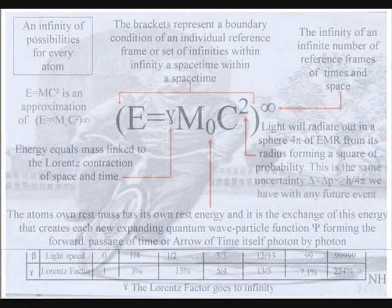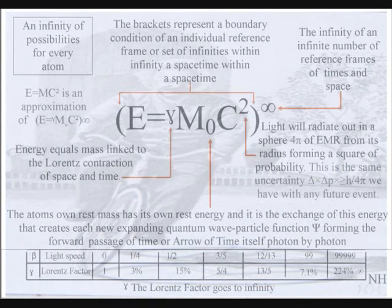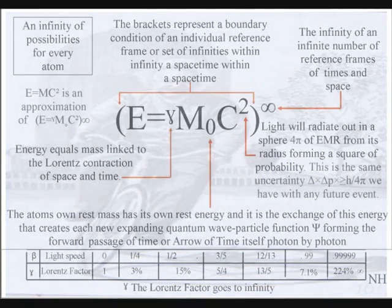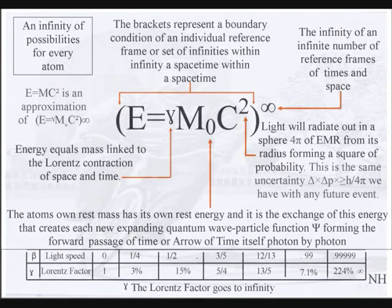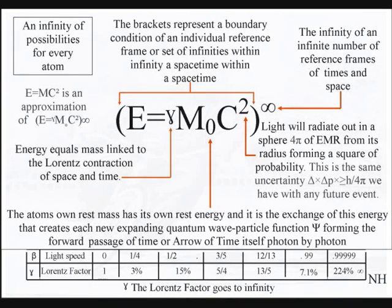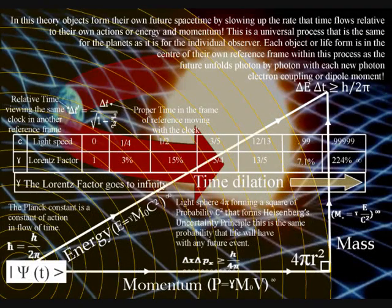All we have to do is place the Lorentz contraction of space and time between the energy and mass. Therefore, the greater the energy, the greater the contraction of space and the slower time will run. Mass will increase relative to this.